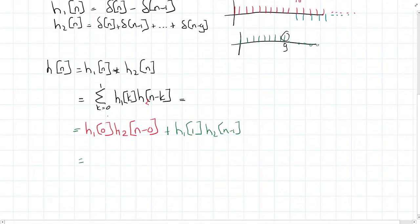So this gives us the following equation. At the moment n is zero for h1, this is equal to one. So we have one times h2n. So we have simply h2, which is delta n plus delta n minus one, all the way up to delta n minus nine.